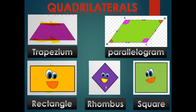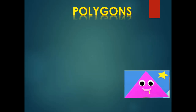And this is a square. In a square, all sides are equal in length, and each two opposite sides are parallel and equal in length. So my students, quadrilaterals are any polygons with four sides and four vertices. Examples include: trapezium, parallelogram, rectangle, rhombus, and square. Thank you, my students.